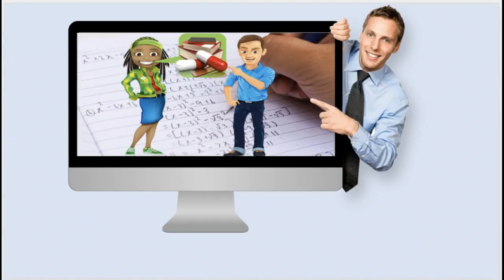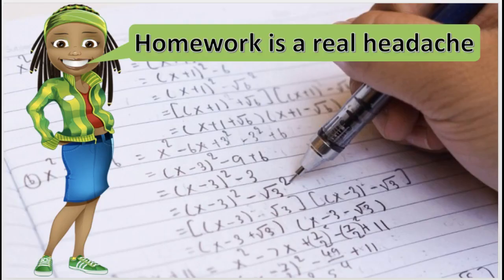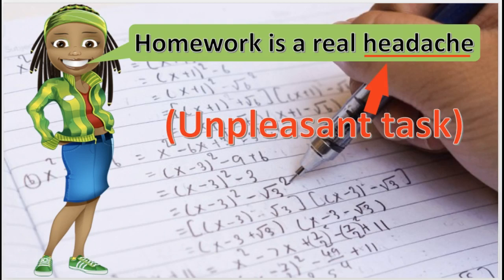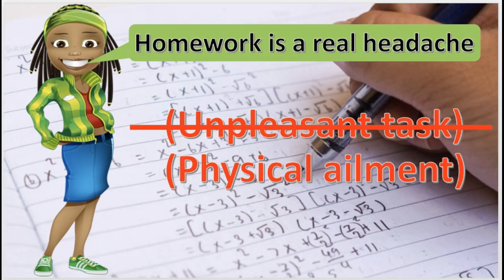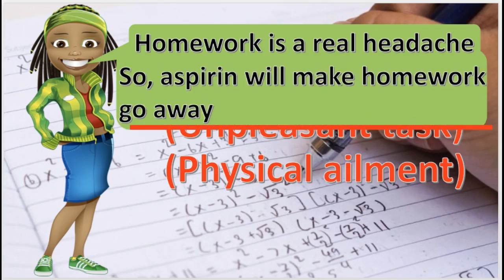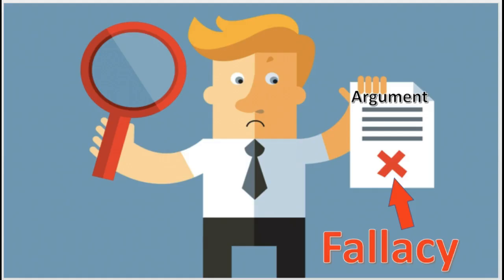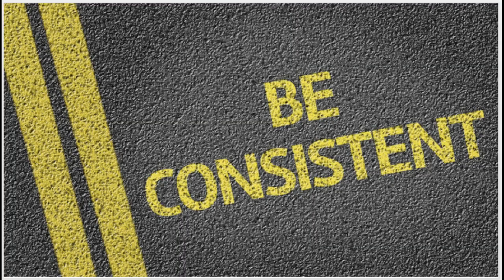Let's examine that illustration. Cindy's premise is that her homework is a real headache, and in this premise, headache means an unpleasant task. Cindy then changes the meaning of the word headache to refer to a physical ailment, and then concludes that aspirin will make her homework go away. To avoid committing this fallacy, the words and phrases of your argument should remain consistent.